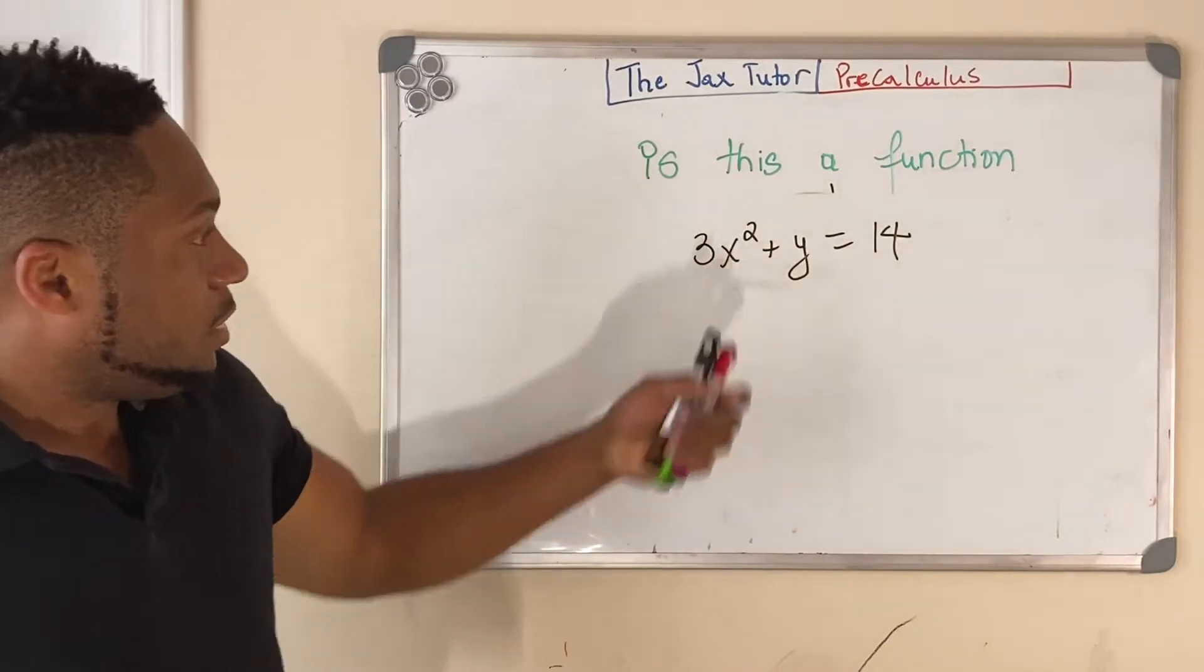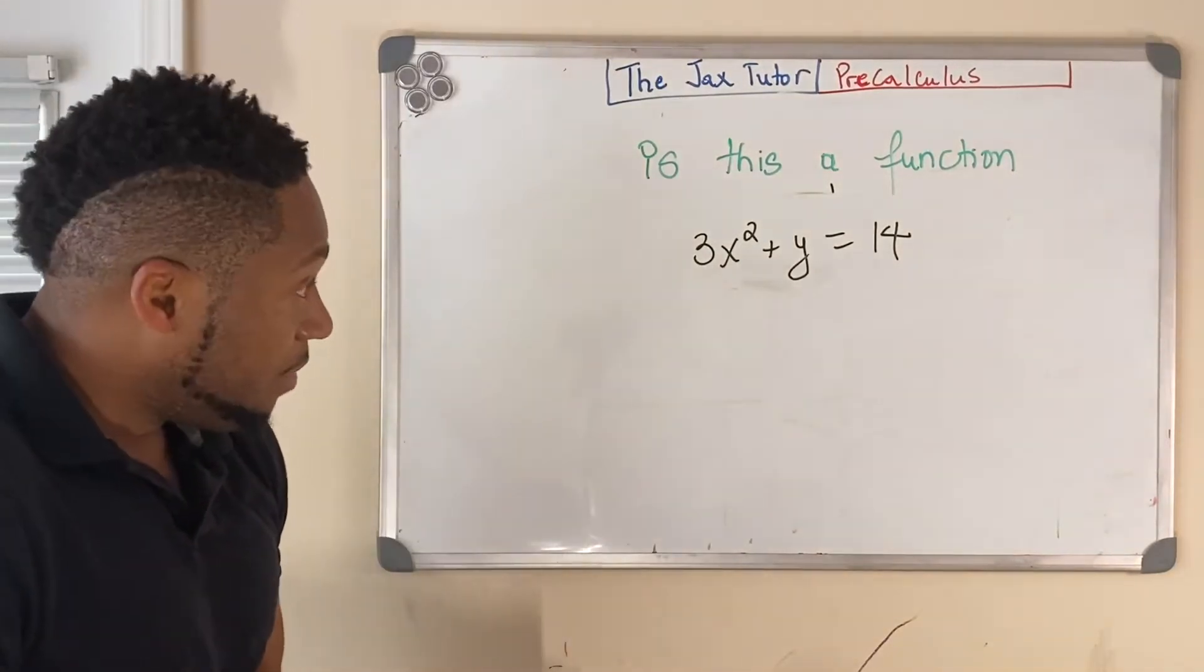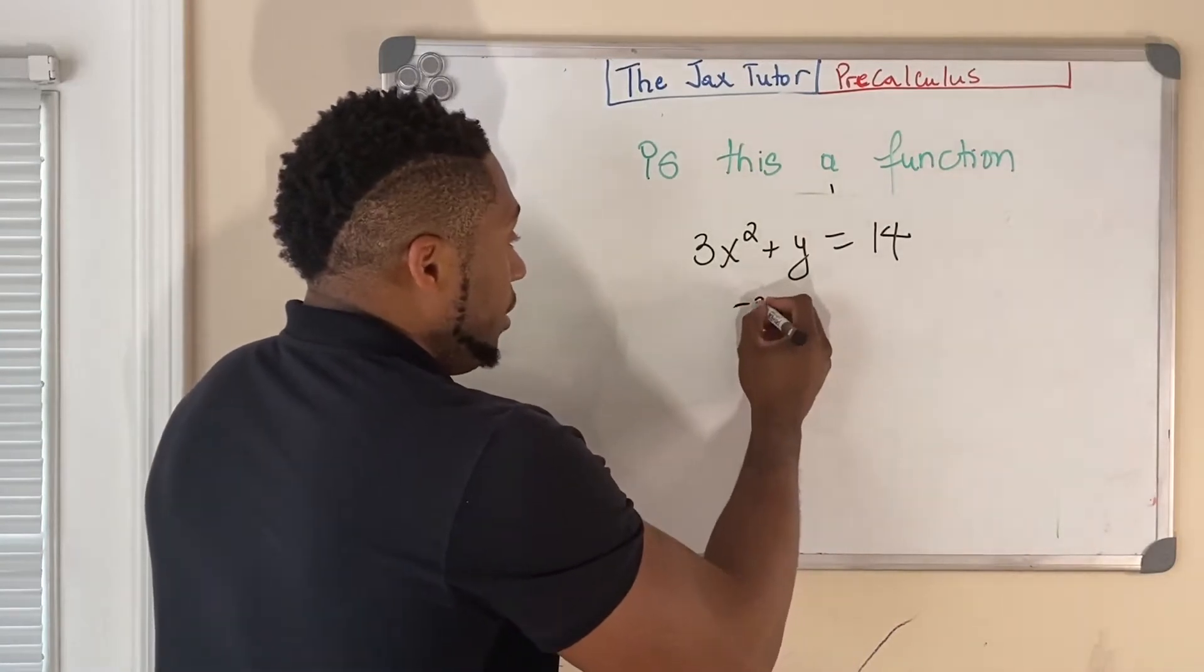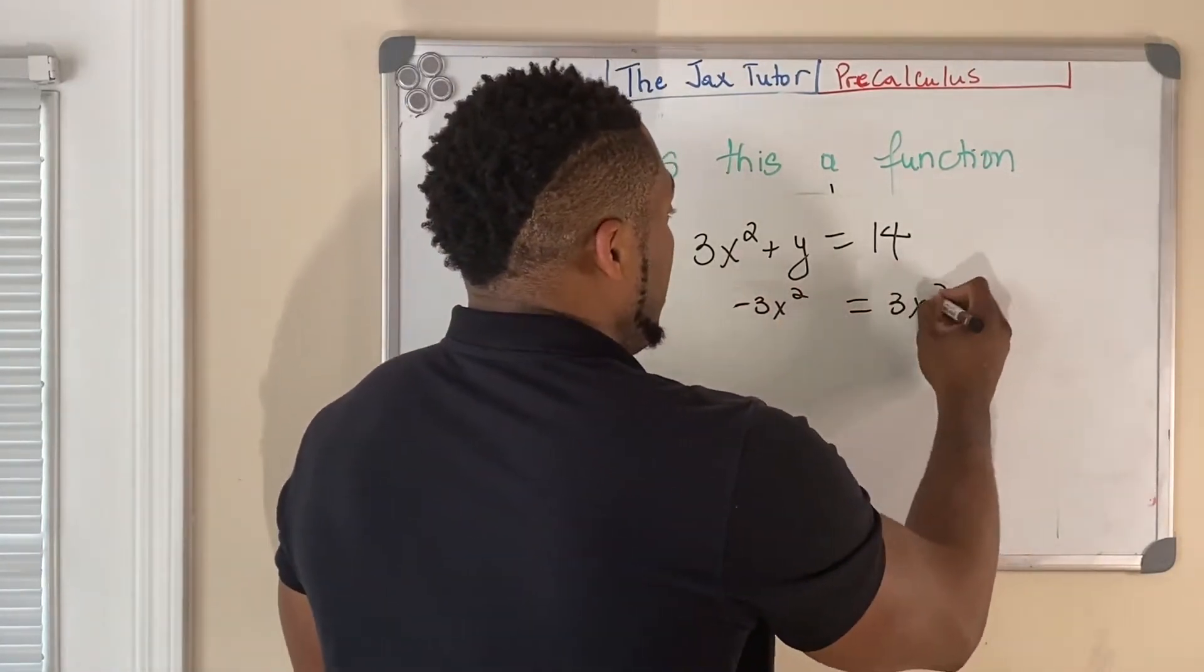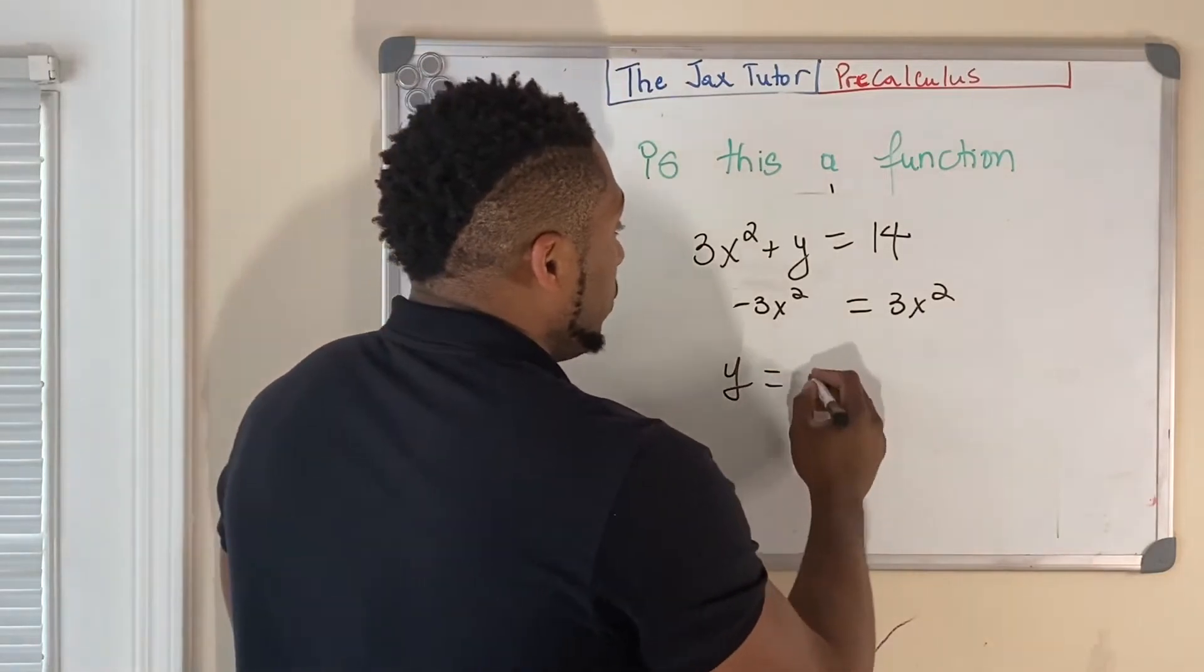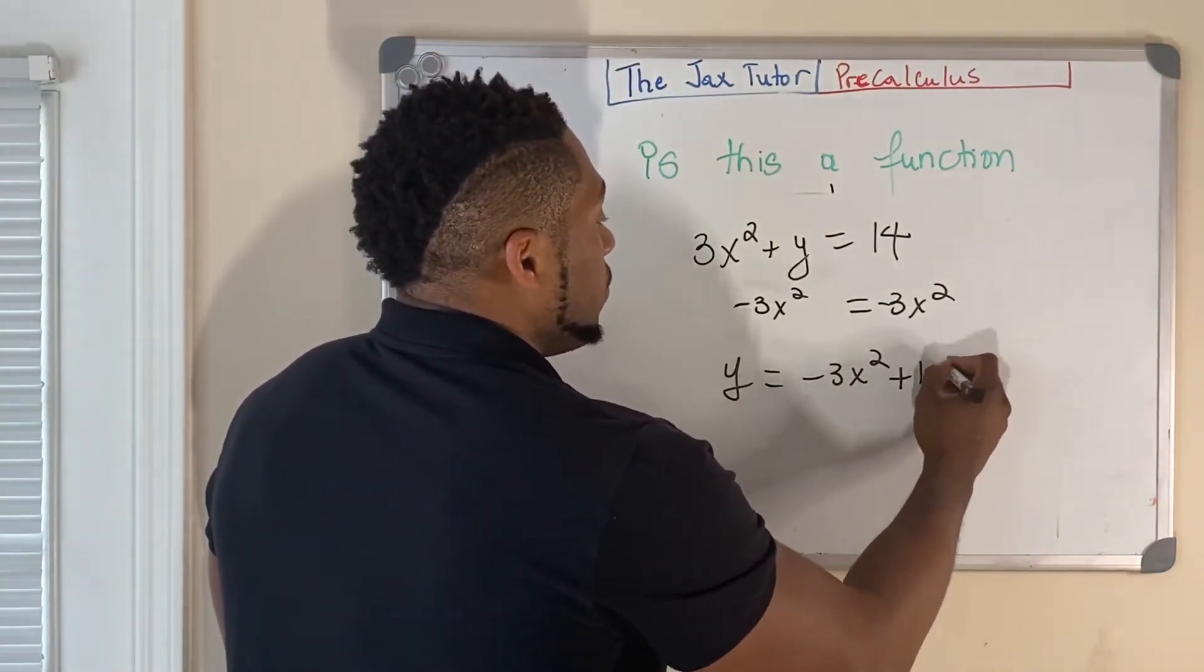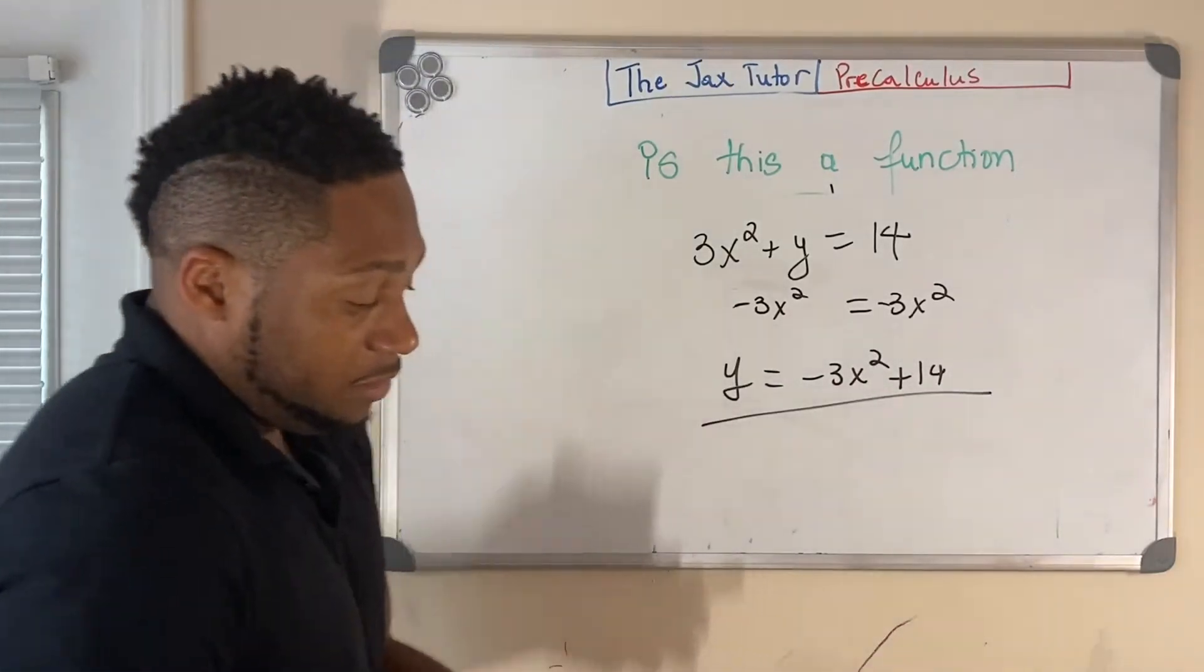So we're going to see if this is a function. What we have here is y is equal to, so if I subtract 3x squared from both sides, that means y is equal to negative 3x squared plus 14. So now, is this a function?